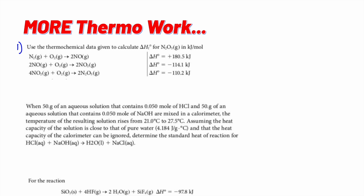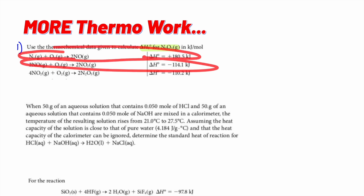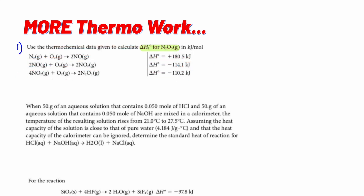Number one says: use the thermodynamic data given to calculate the change in H for N₂O₅ in kilojoules per mole. It does not actually give you an equation — there are some extra steps. I have equations with enthalpies, so you should be thinking Hess's law. The trick is I don't have an actual final equation.